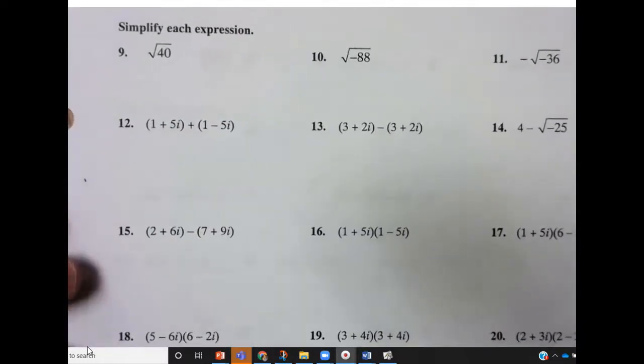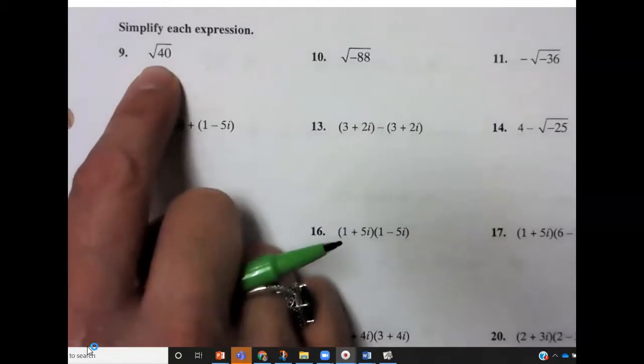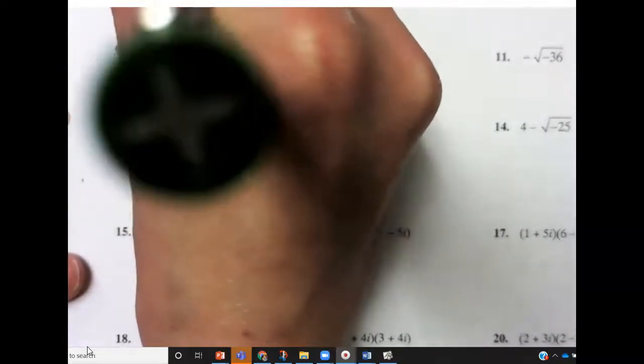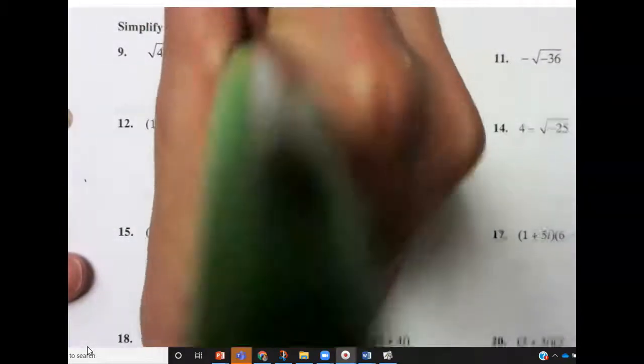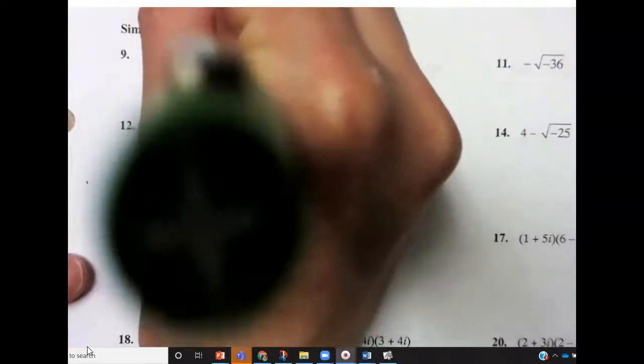When we get to simplifying expressions, if there's no negative under the square root then there's no i. So the square root of 40 is kind of like the square root of 4 and the square root of 10. So it becomes 2 square roots of 10.